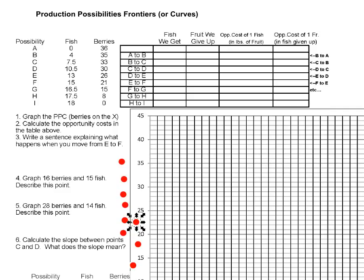In this lecture we're going to take a look at production possibilities frontiers, or sometimes people call these production possibilities curves. It's a simple model of how we might make decisions. In this simple model we only have two choices of what we can spend our time and resources on. Economics does get more complicated in the real world, but this simple model helps us understand a basic situation — that's the purpose of a model.